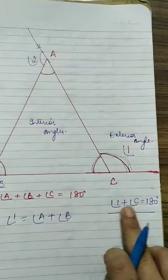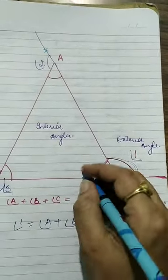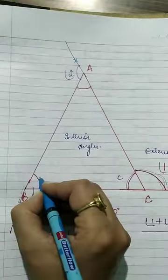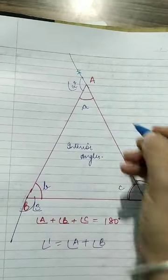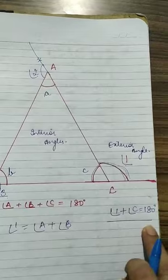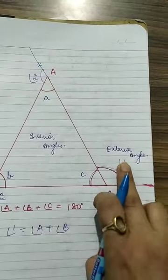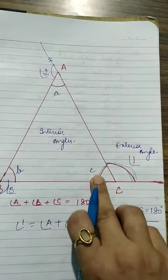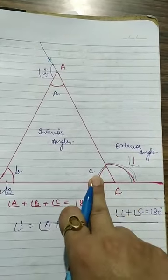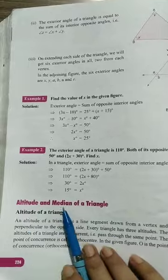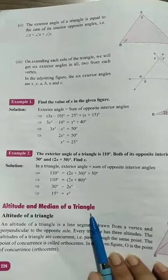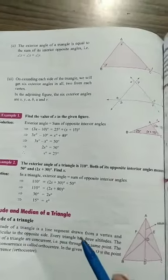The second property is that the sum of the exterior angle and the adjacent interior angle is always equal to 180 degrees. So angle 1 plus angle C equals 180 degrees. This holds true for any exterior angle and its adjacent interior angle.